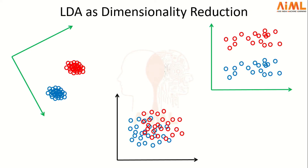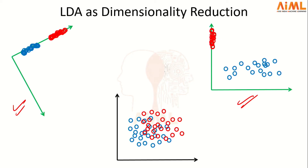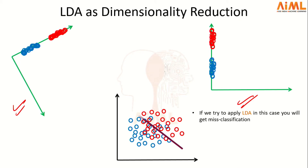Let's visualize how LDA projects data in different scenarios. In the first scenario, LDA will choose the upper unit vector to project the data because both criteria are satisfied. In the second scenario, LDA projects to the side because both criteria are again satisfied. The third case is interesting — projecting the data points onto a unit vector results in quite a significant amount of misclassification, so LDA is not a good option here.